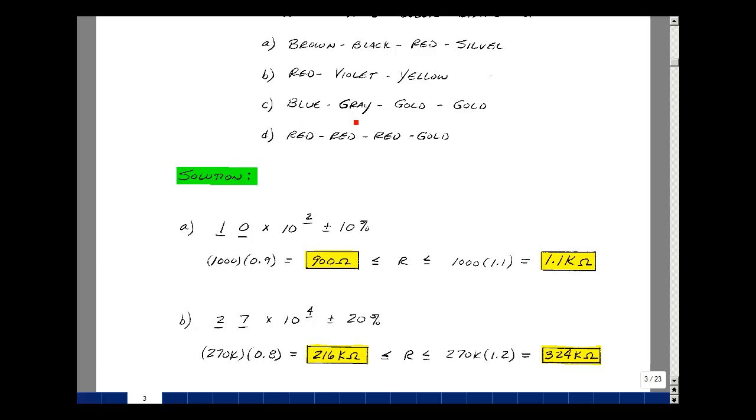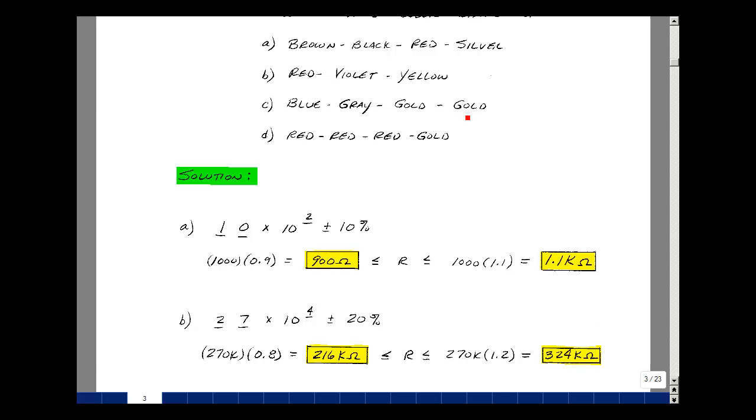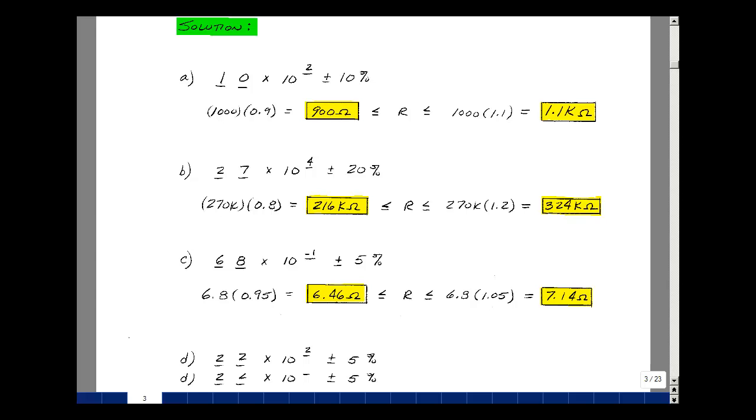Blue is 6, gray is 8, and gold is minus 1, and tolerance for gold is 5%. So then what I've got for a nominal resistance is 6,8 times 10 to the minus 1,